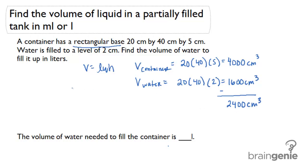The last thing in this problem that makes it a bit more complicated is that we need to fill it up in liters. We need to convert this 2,400 cubic centimeters to liters. Let's recall that 1,000 cubic centimeters equals 1 liter. Therefore, 2,400 cubic centimeters should equal 2.4 liters.